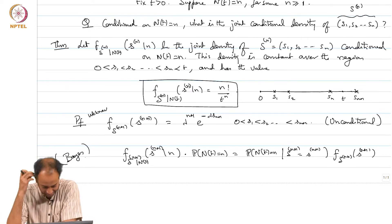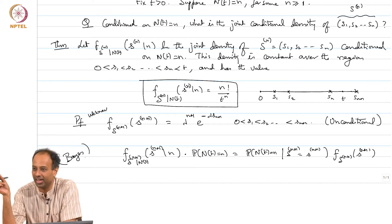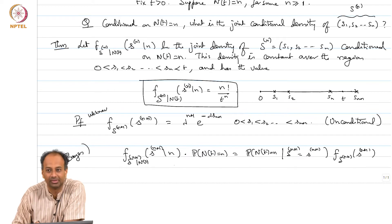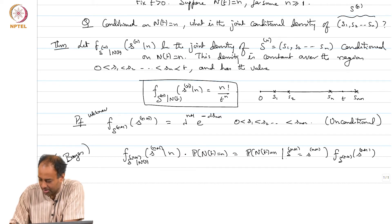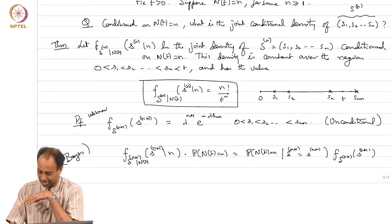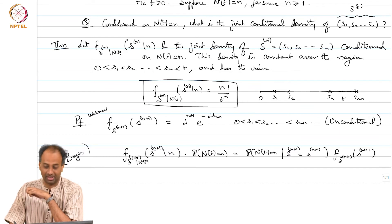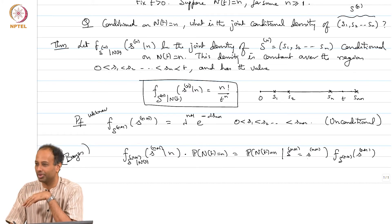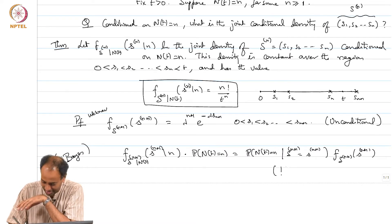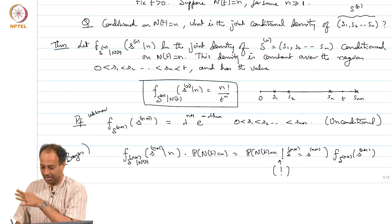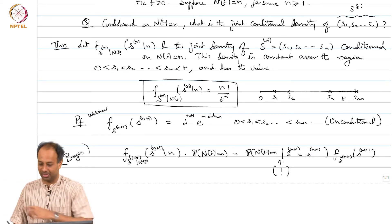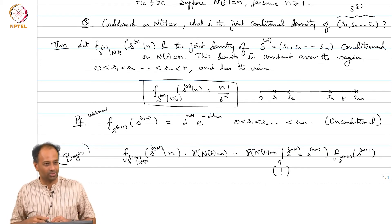This comes from writing: f_{S_{n+1} | N(t)}(s_{n+1} | n) times P(N(t) = n) = P(N(t) = n | S_{n+1} = s_{n+1}) times f_{S_{n+1}}(s_{n+1}), by Bayes theorem. This is essentially p(A|B) * p(B) = p(B|A) * p(A), except with densities. There is a subtlety in conditioning on continuous random variables taking specific values — the correct interpretation is putting them in small intervals and sending delta to zero.